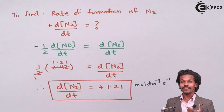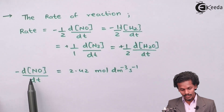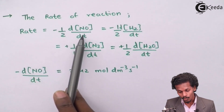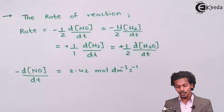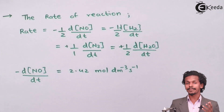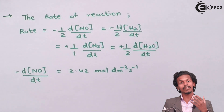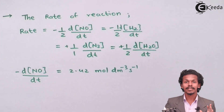Now we calculate the rate of formation of H₂O. The given data we extracted was: −d[NO]/dt = 2.42 moles per dm³ per second, which is the rate of consumption of NO. We will equate this NO term with H₂O. One important tip: the given data may be a rate of formation or a rate of consumption — you should always equate the given data directly with the requirement.